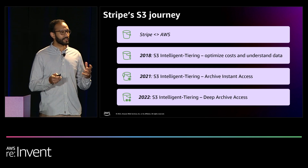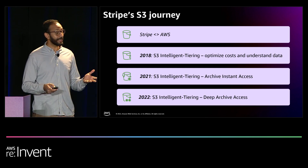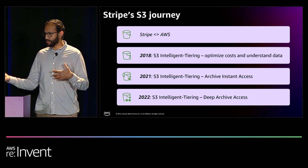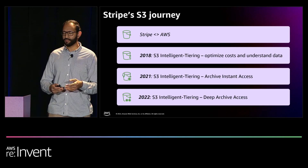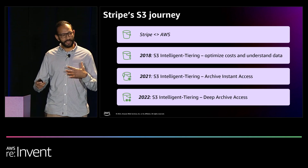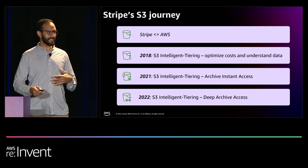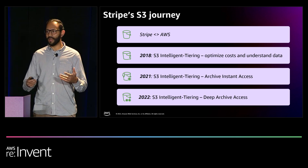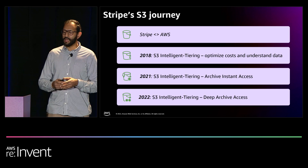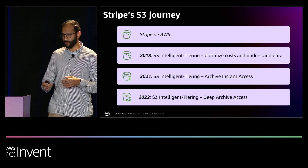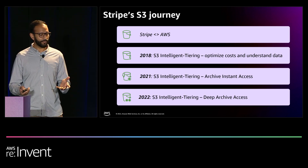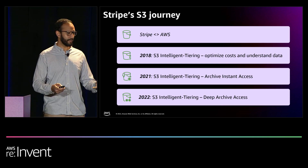Our journey with S3 began over a decade ago when Stripe began using AWS. We started using standard tiering, and in 2018 we started experimenting with intelligent tiering to look at how we could optimize our costs and organize our data. In 2021, when S3 introduced the archive instant access tier, we realized we could actually take the next step forward.